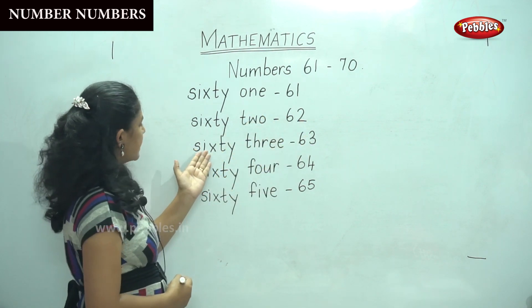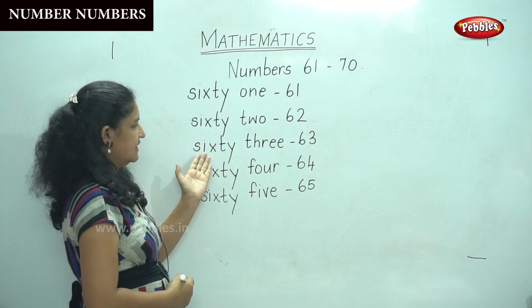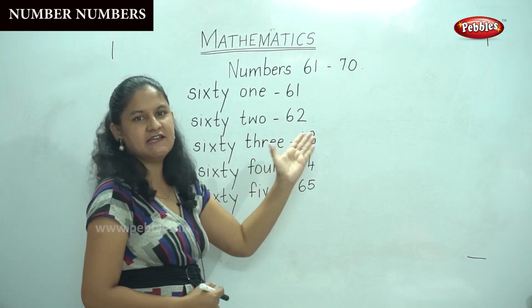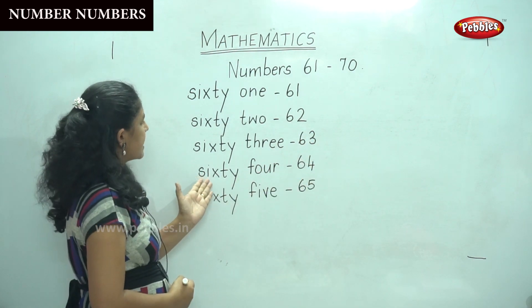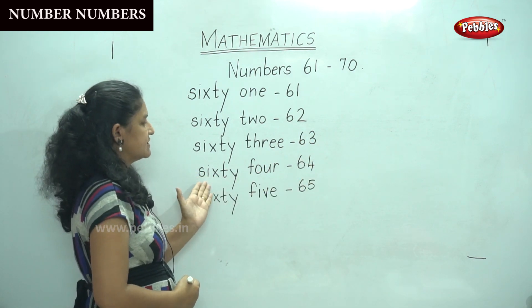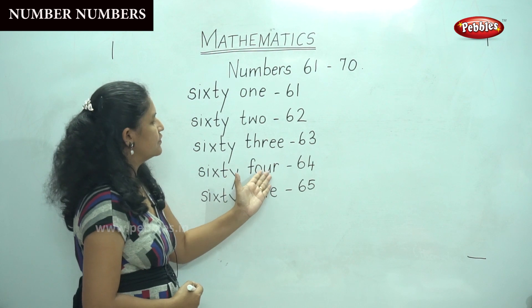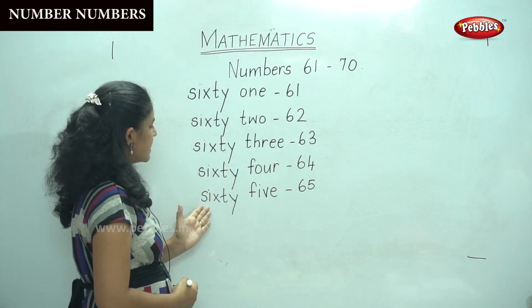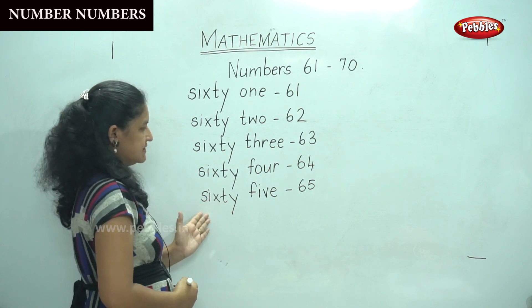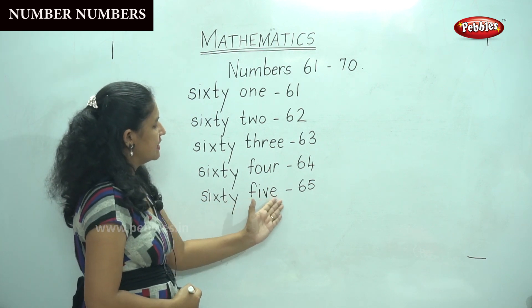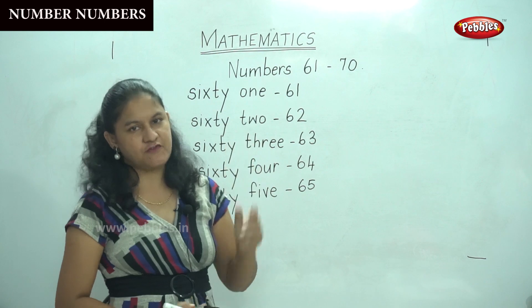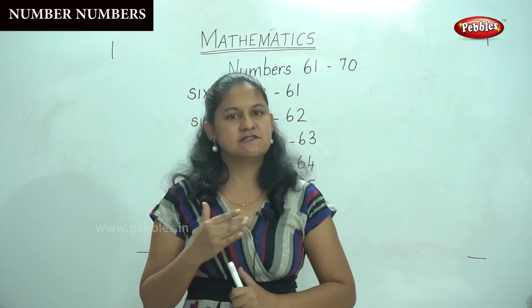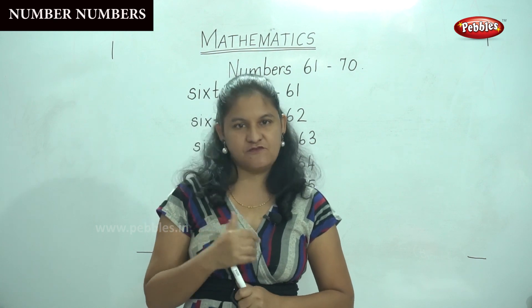SIXTY — S, I, X, T, Y — 60. THREE — T, H, R, E, E — 3, 63. SIXTY 60, FOUR — F, O, U, R — 4, 64. SIXTY 60, FIVE — F, I, V, E — 5, 65. So now we have learnt the number names for numbers 61 to 65.